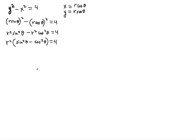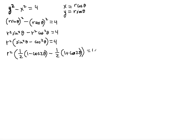We can apply the half-angle formulas for sine squared theta and cosine squared theta. So r squared times: sine squared theta equals one half times (1 minus cosine 2 theta), minus cosine squared theta equals one half times (1 plus cosine 2 theta), and that whole expression equals 4.